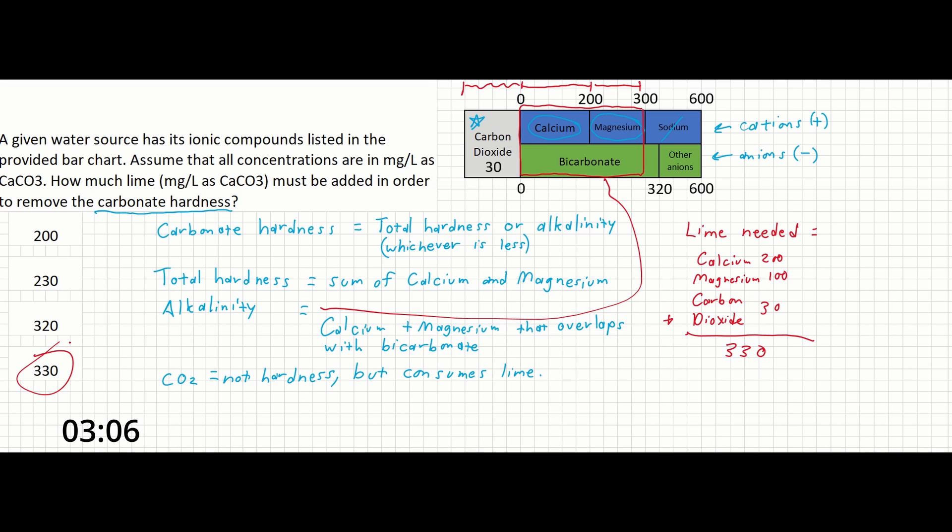I don't think there is much in the manual related to bar charts, but if you search softening, you will find some compounds used in softening and their molecular weights. This could be useful if the problem did not give all of the values as milligrams per liter as CaCO3, and instead wanted you to calculate them before summing them.